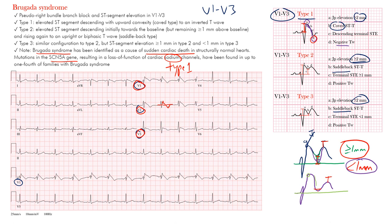Let's recap. Brugada syndrome is a form of pseudo right bundle branch block with ST segment elevation in the right precordial leads V1 through V3. All types have J-point elevation of at least 2 millimeters. Type 1 has coved-type morphology — differing from Types 2 and 3 which have saddleback — with descending terminal ST elevation and a negative T wave. A negative T wave suggests Type 1, because Types 2 and 3 have positive T waves. Type 2 versus Type 3 comes down to that terminal ST elevation: above 1 mm is Type 2, less than 1 mm is Type 3.